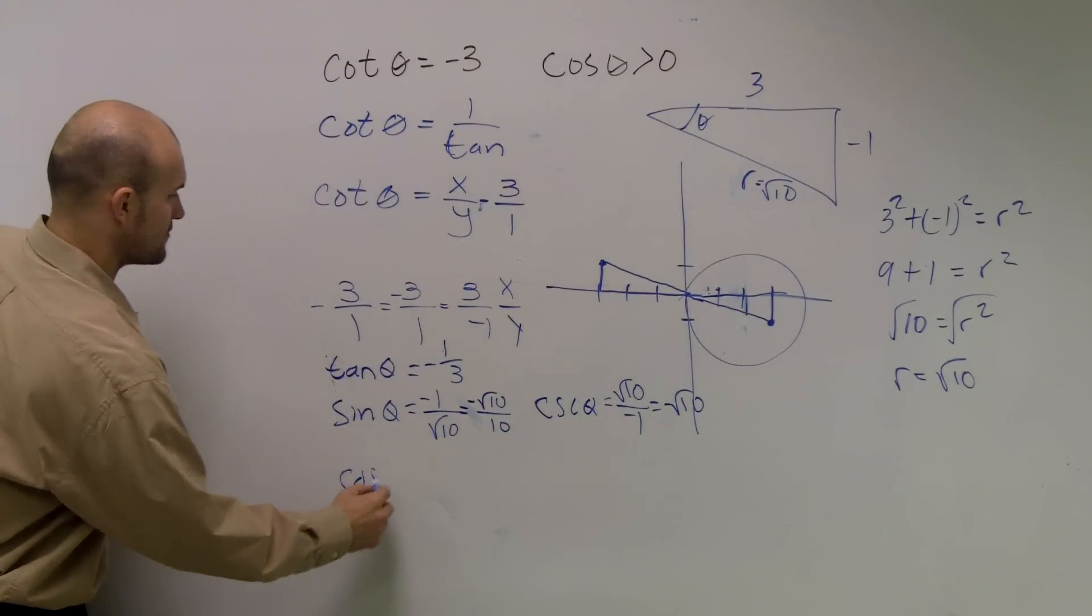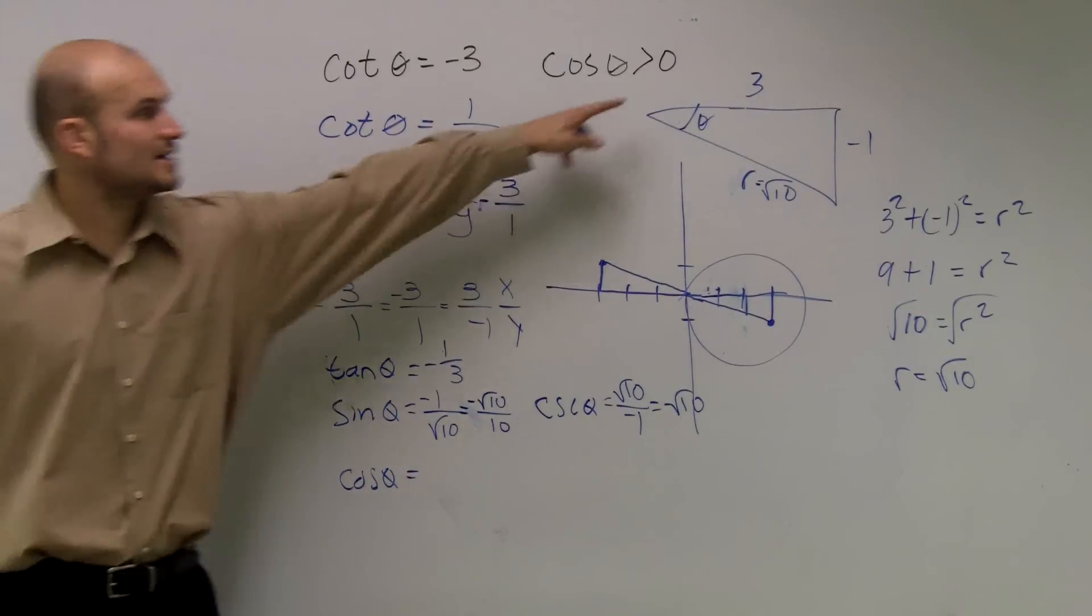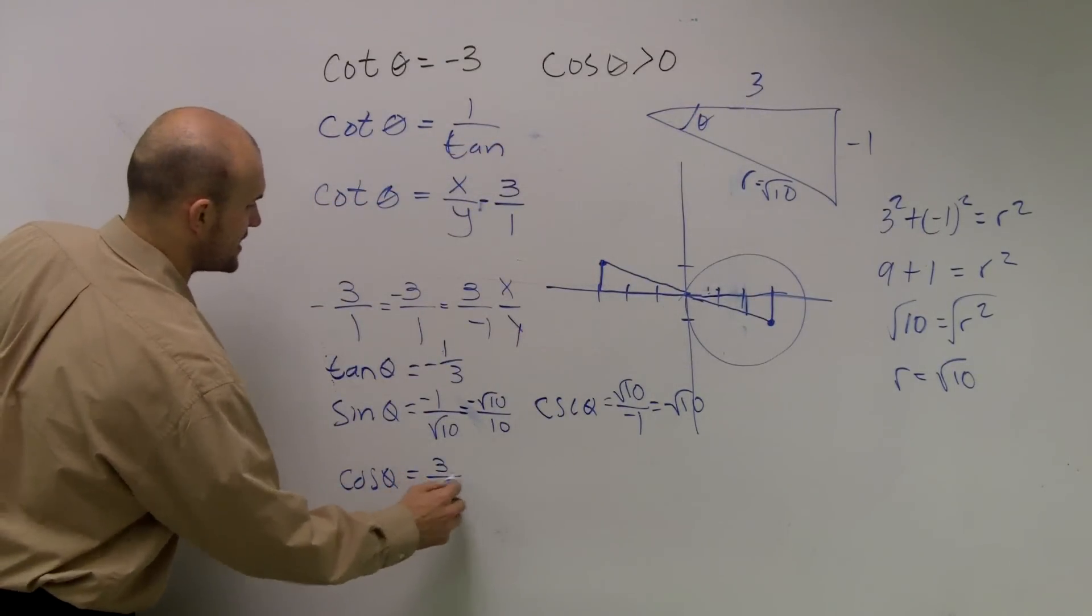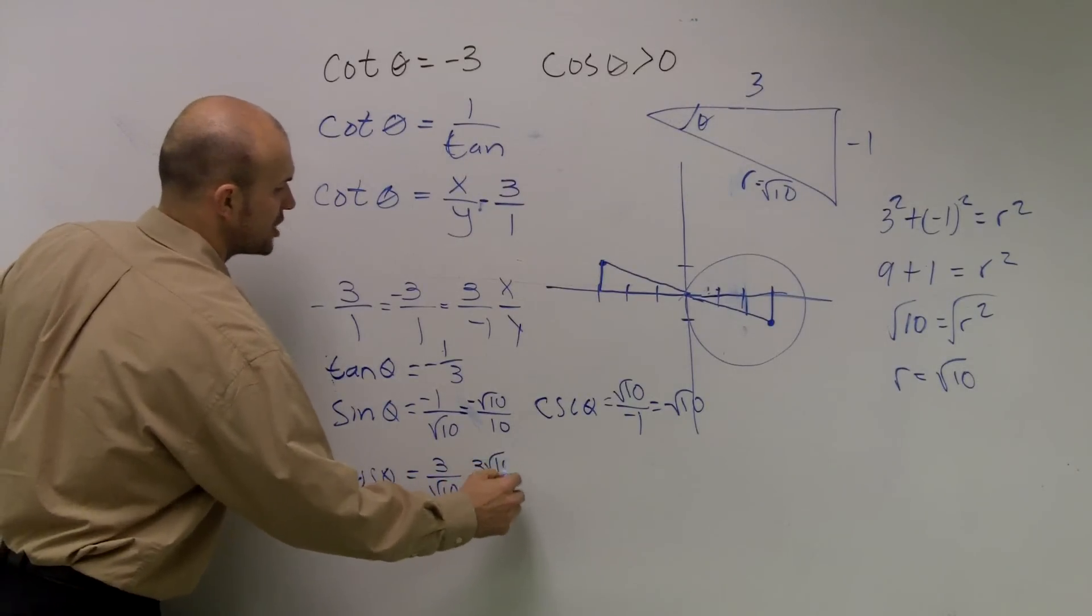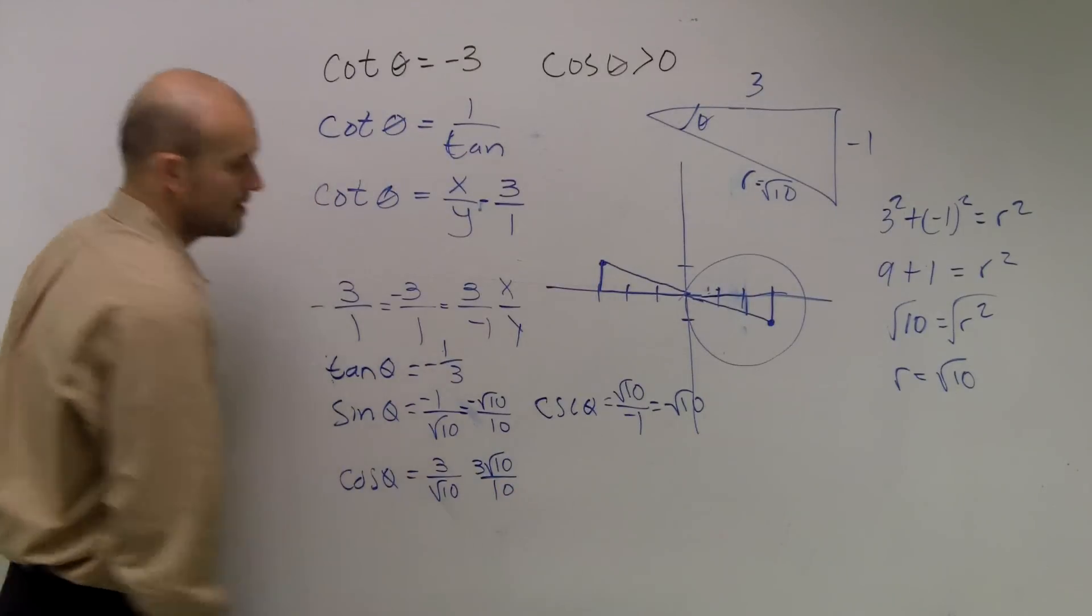If I do cosine of theta, that's going to be my adjacent over my hypotenuse. So it's 3 over radical 10. Rationalize the denominator. Means multiply the square root of 10 on top and bottom. And you get that answer.